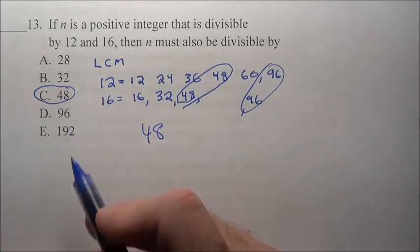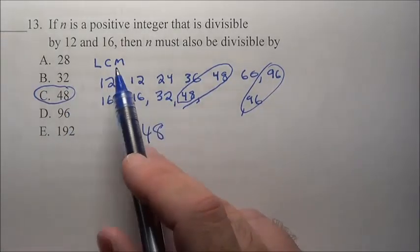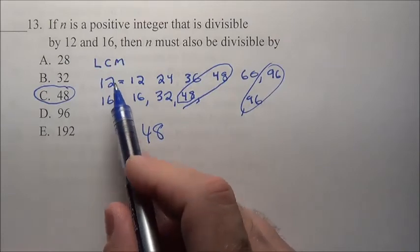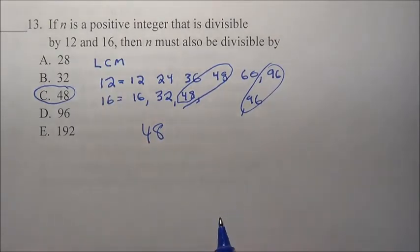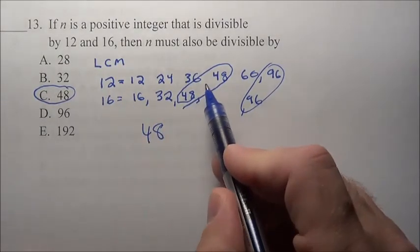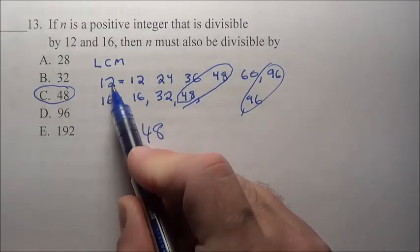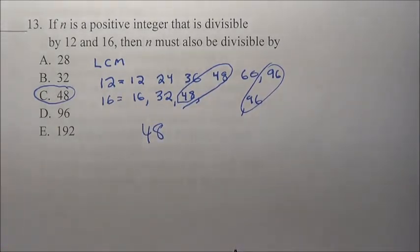So don't try to fall for that thinking that there's two answers. Simply, when you have a problem like this on SAT, you're simply looking for the least common multiple between those two numbers because you're looking for a number that both these guys can be divided by. There's problem 13 for you.